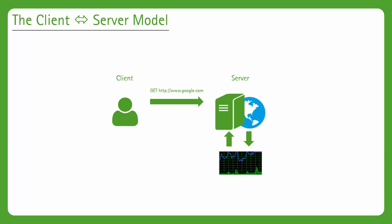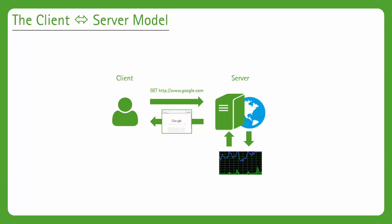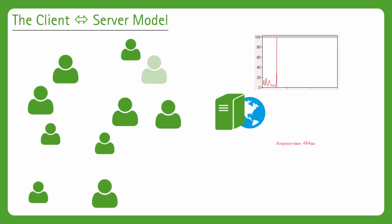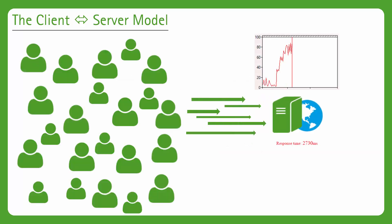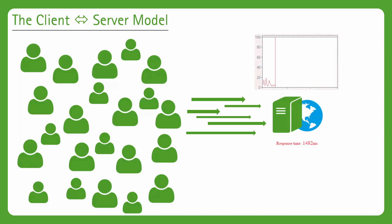In reality there are many more servers involved, but for the sake of this example let's keep it simple and assume there is just a single server. As a result of the request, that server has to do some thinking before it can send a response back to Bob. Once that thinking is complete, Bob will see the Google homepage in his browser. The important bit to understand is that the server thinking is synonymous with it using computing resources in order to service the request.